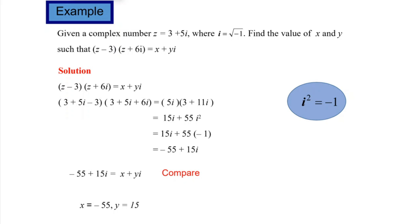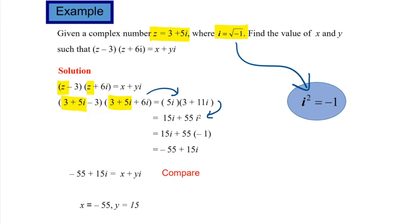For the following example, please read the question carefully. The important information is z = 3 + 5i. A key tip: i = √(−1) means i² = −1. We want to find the values of x and y. First, substitute z with 3 + 5i, simplify, and expand. We have i², so substitute i² with −1, getting the answer in a + bi form. Comparing left-hand side to right-hand side, we get x = −55 and y = 15.